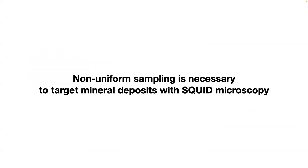This overall means that if you're going to target a speleothem, you have to do non-uniform sampling. A uniform sampling approach will yield regions with excellent magnetic records alongside regions with very poor records. By doing non-uniform sampling — going finer in regions with plenty of magnetic carriers and using larger samples in regions with fewer carriers — you can obtain a better overall record from your speleothem.